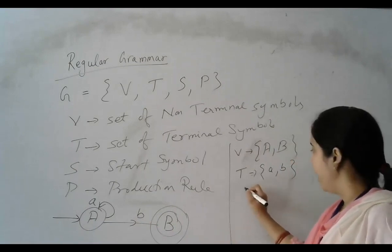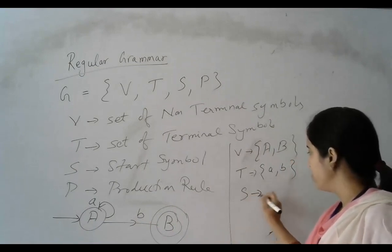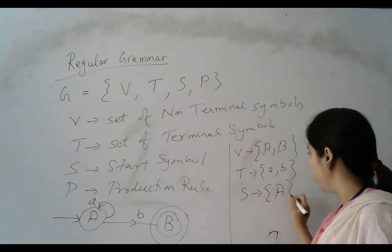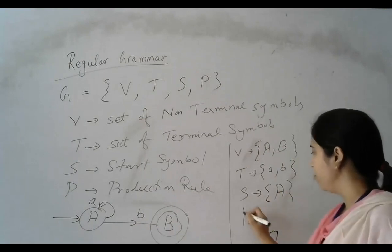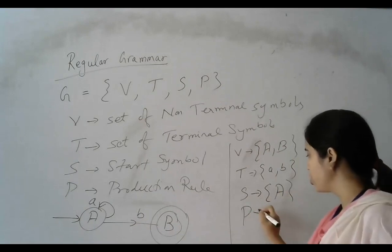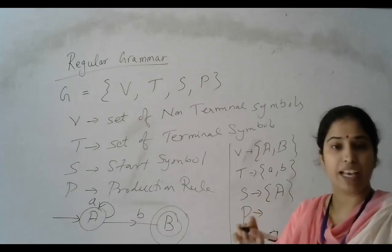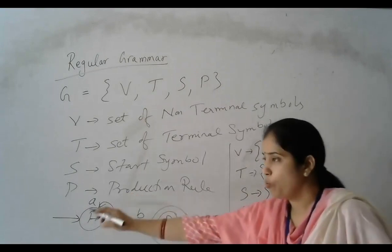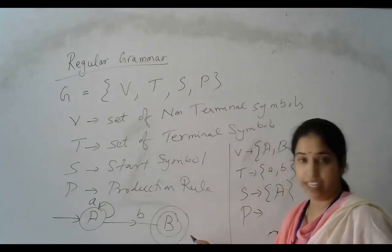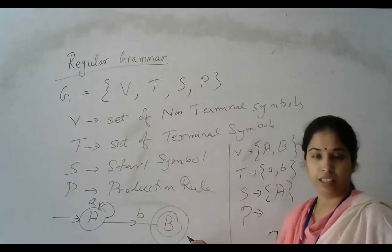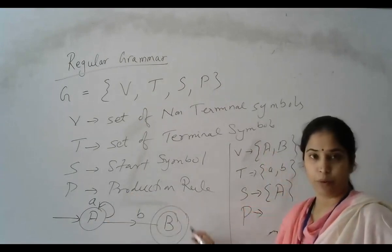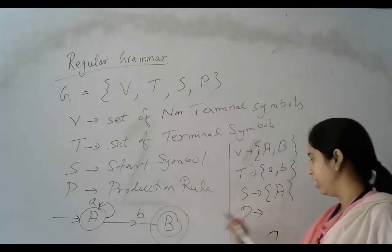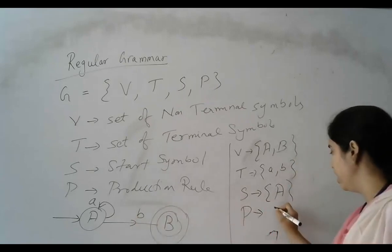Now S is the start symbol, so start symbol is capital A. And P is the production rule. How can we write the production rule of this DFA?